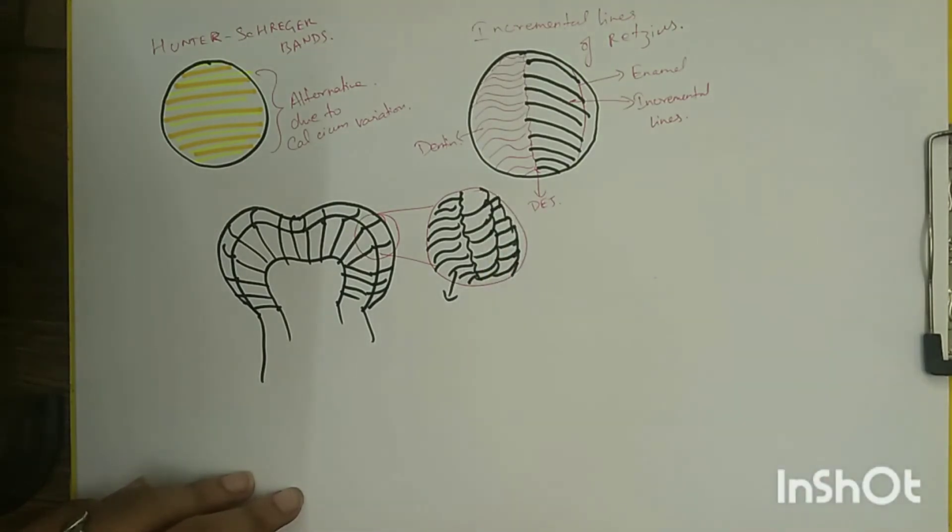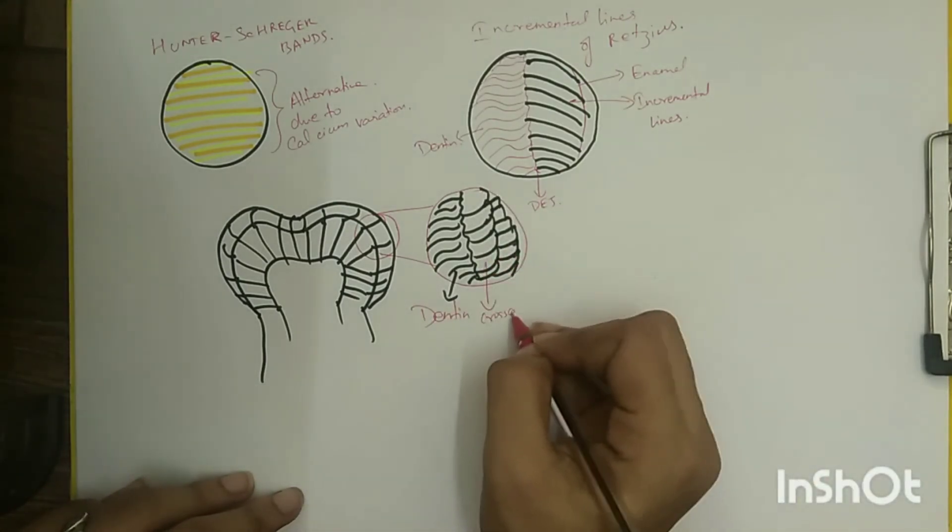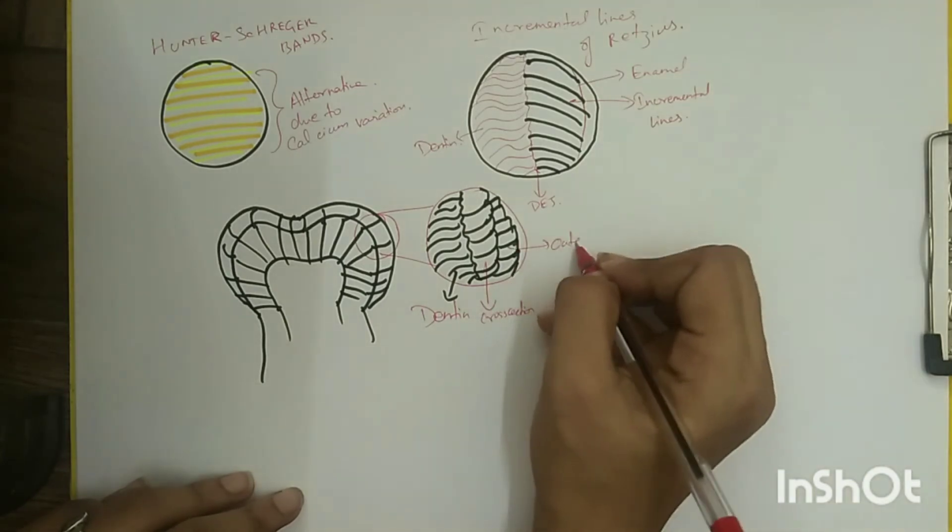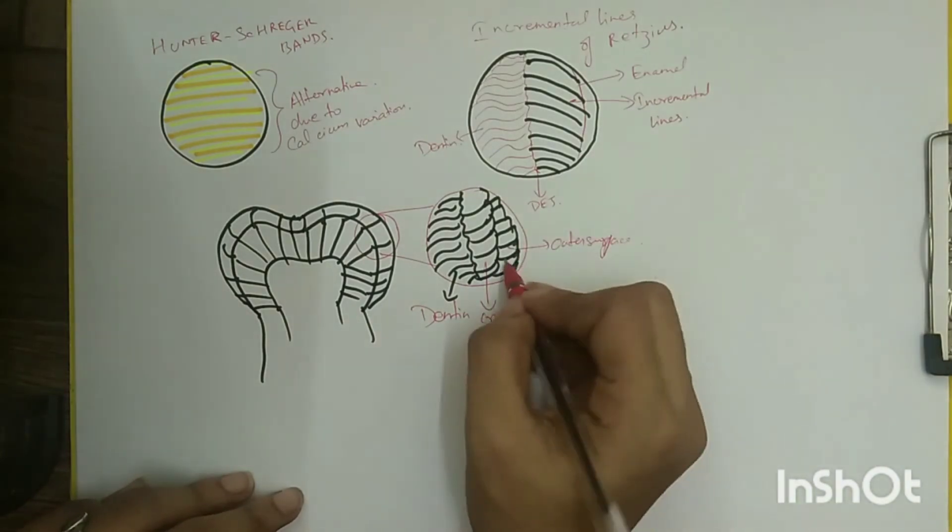They are more in number in the cervical region and can be demonstrated by rubbing graphite on the surface of the tooth.